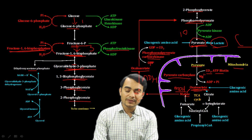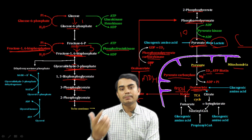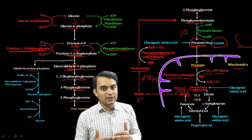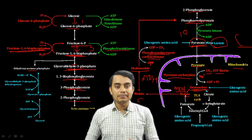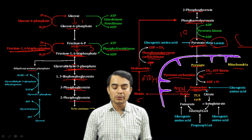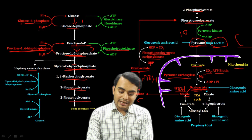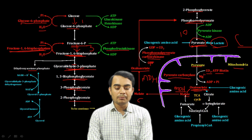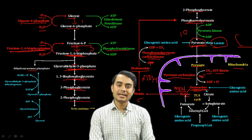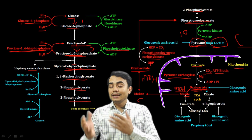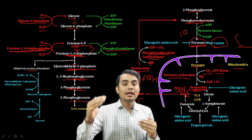Fructose-6-phosphate is then converted to glucose-6-phosphate by isomerase enzyme. Glucose-6-phosphate cannot directly form glucose using hexokinase or glucokinase. So another enzyme is used: glucose-6-phosphatase, which again utilizes a water molecule and removes an inorganic phosphate group to form the final glucose molecule. This completes gluconeogenesis from pyruvate.